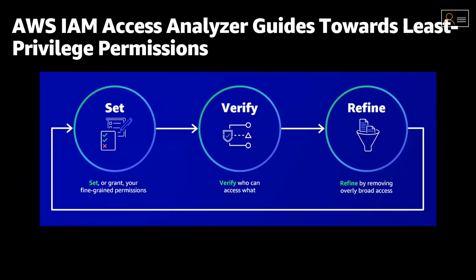Now let's talk about the principle of providing least privilege. AWS IAM Access Analyzer helps remove unintended public and cross-account access by analyzing existing permissions. It generates least-privileged policies based on who attempted to take what actions against AWS resources within an account, and whether the action was allowed or denied. As a result, the generated policy will only contain actions that were actually undertaken by the users — making it simple to set up least-privileged permissions.